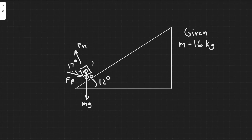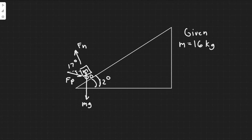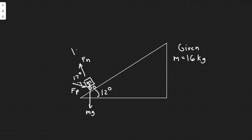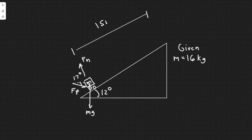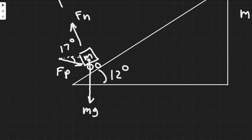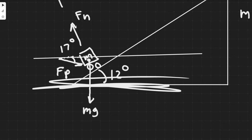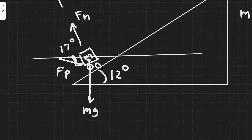First, let's draw what's going on. The cart has mass m = 16 kg on an incline of 12 degrees, and it travels a distance of 15 meters. The force F_p acts 17 degrees below the horizontal — below the x-axis — pointing at a downward angle as it pushes the cart up the ramp.